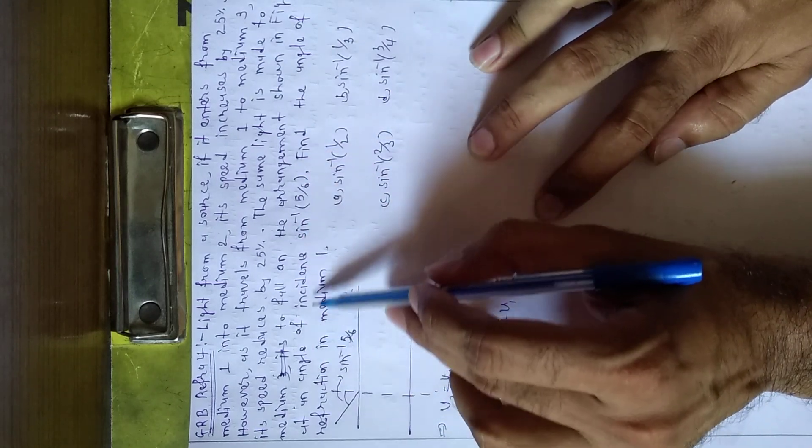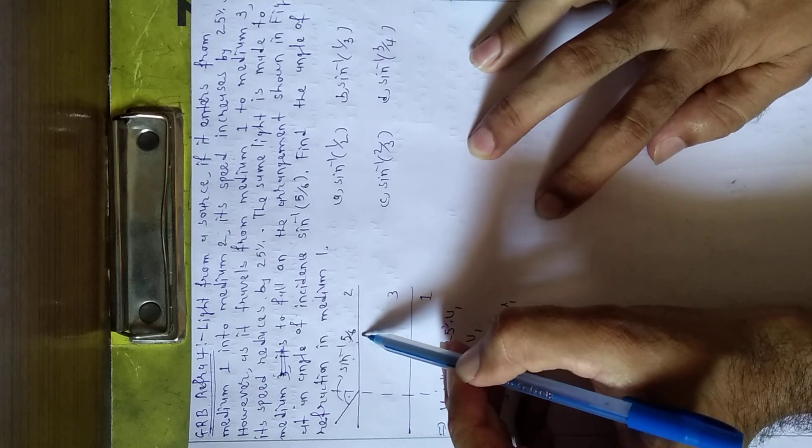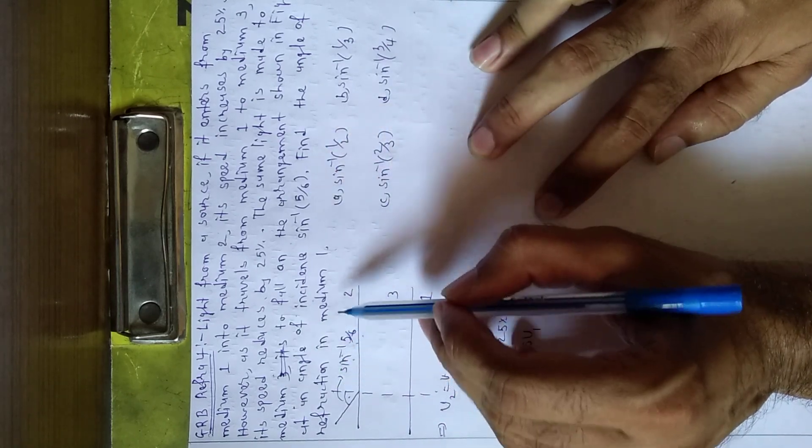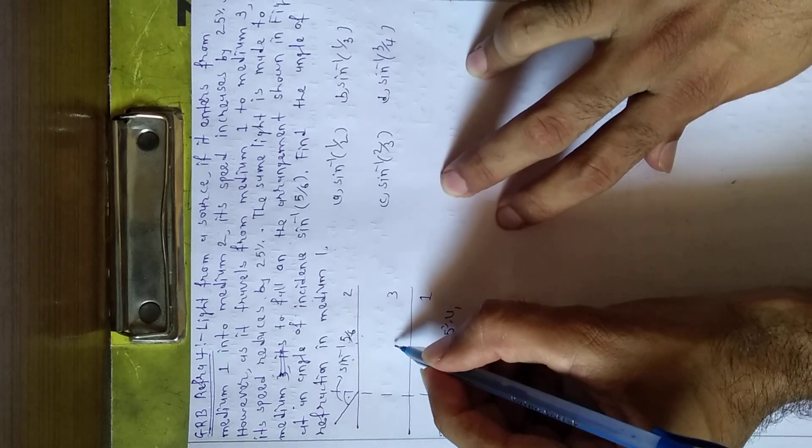shown in the figure at an angle of incidence. Here the angle of incidence is given as sine equals 5 by 6. Find the angle of refraction in medium 1.